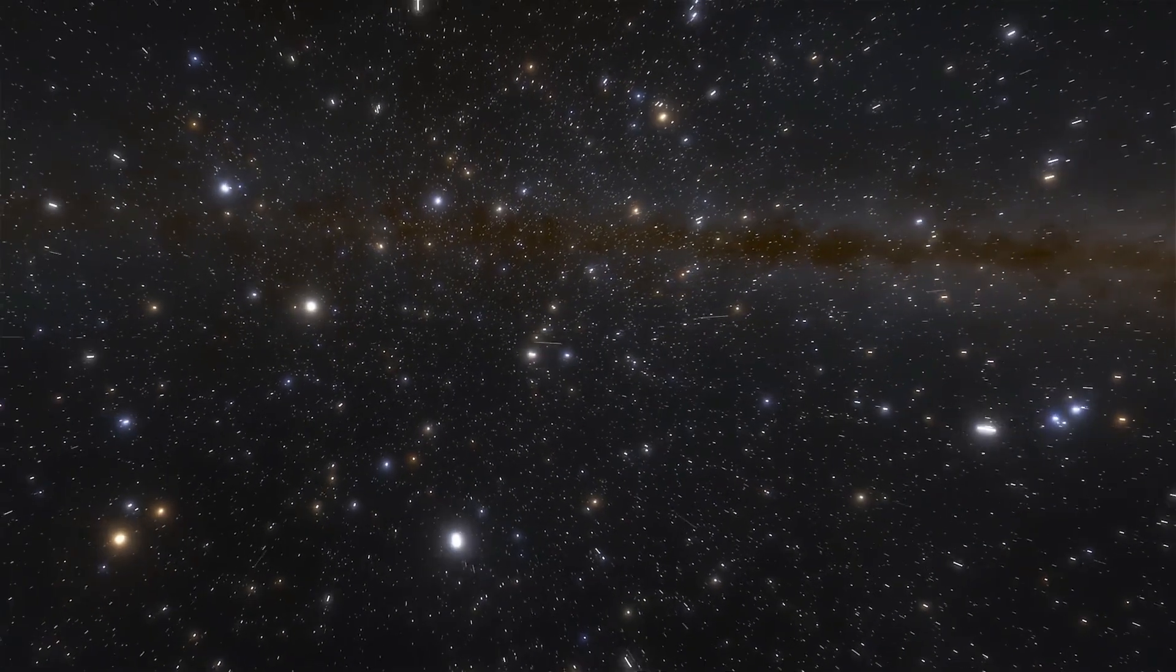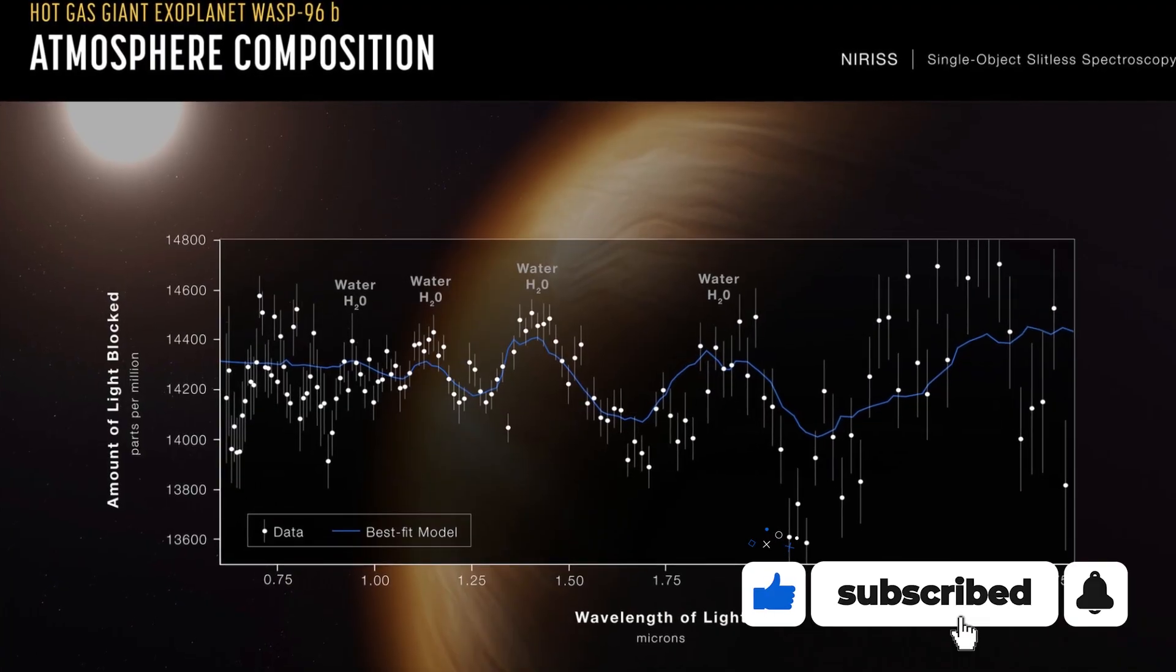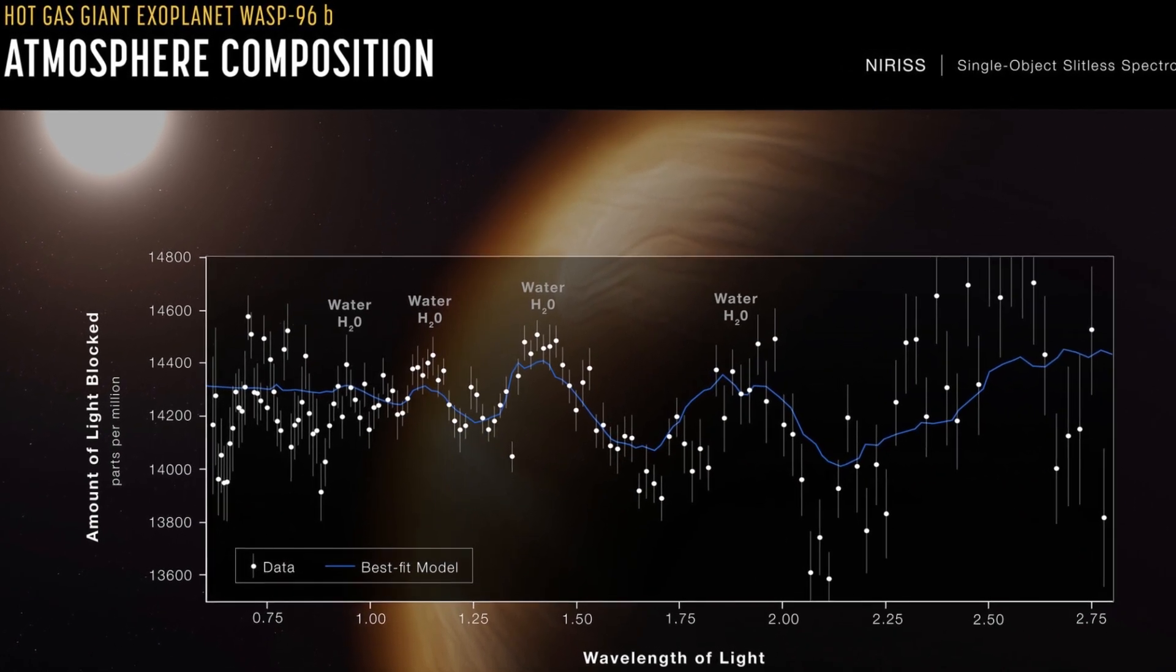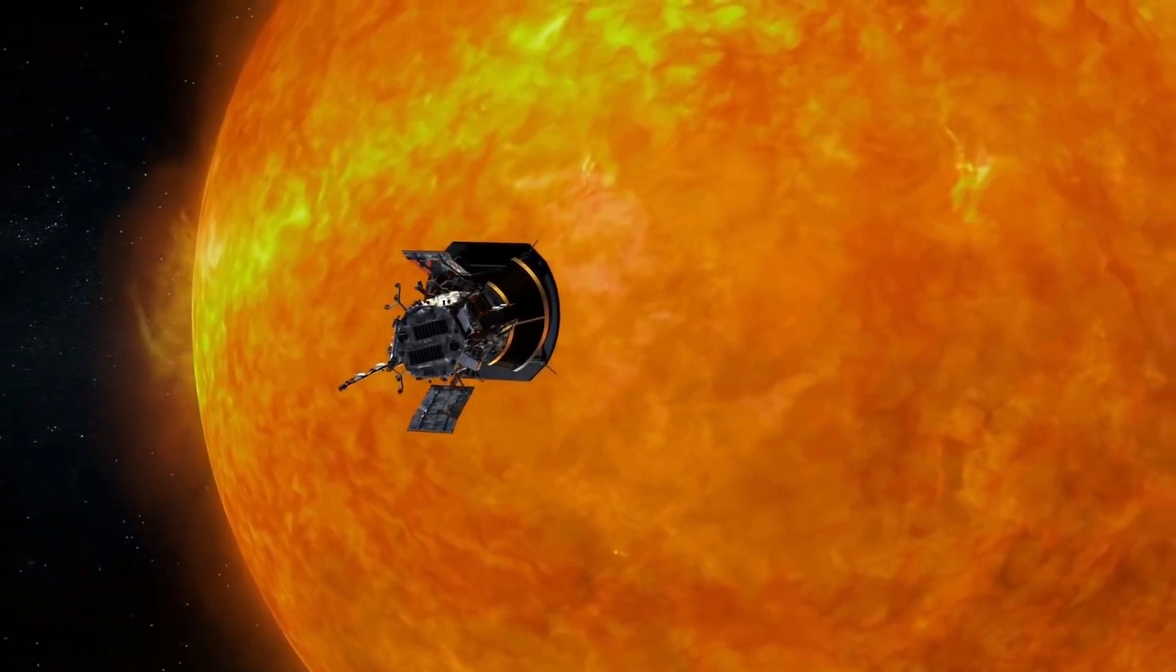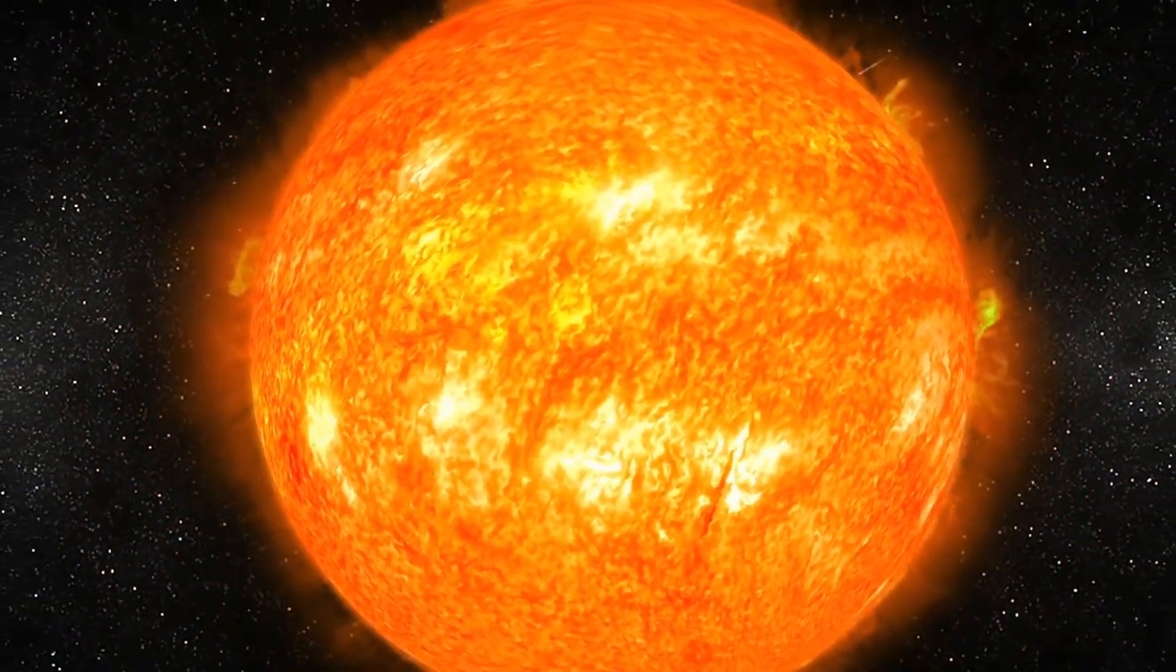For perspective, WASP-96b is closer to its parent star than Mercury is to the Sun, which ultimately means that any life signature elements on the planet would most likely be disintegrated by heat.